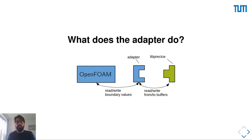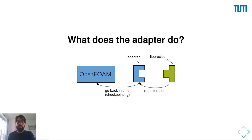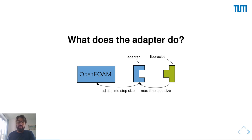The adapter has the following tasks. First, it needs to read new values from preCICE and apply them to the right places in OpenFOAM. Similarly, it needs to extract boundary values from OpenFOAM and pass them to preCICE. In implicit coupling, the adapter needs to tell OpenFOAM to redo an iteration — to go back in time — so it keeps checkpoints to store the complete solution for a specific time and reload it later. It also needs to adjust the timestep of OpenFOAM when preCICE tells us to slow down.